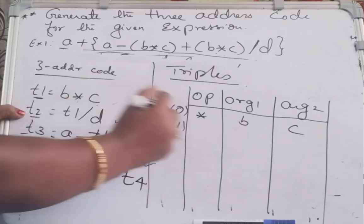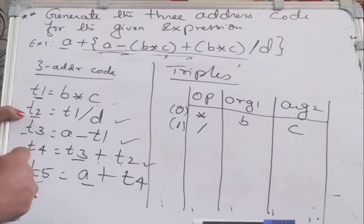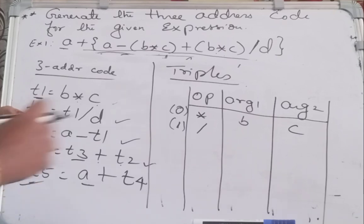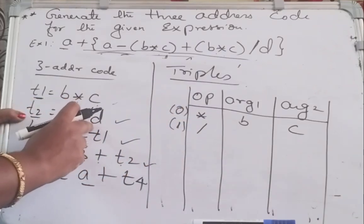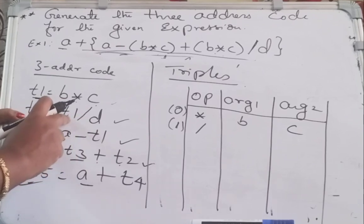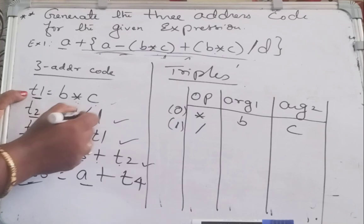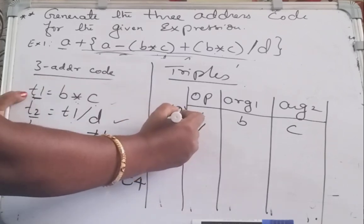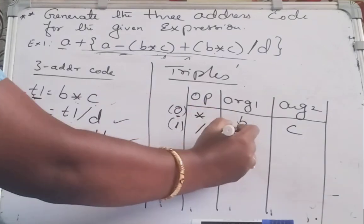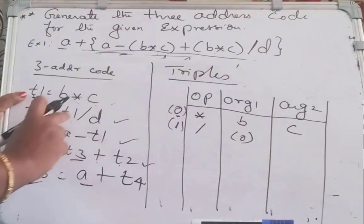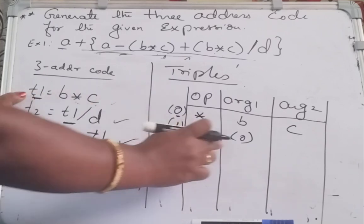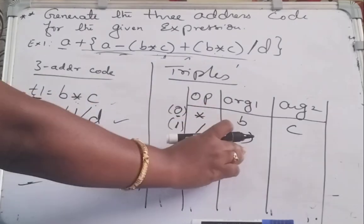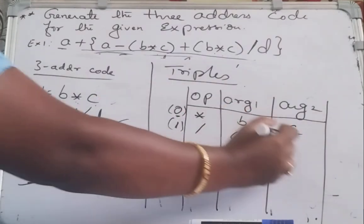The next instruction is address 1. The operator is division. T2 = T1 / D — but instead of writing T1, in triples you should write the address of that instruction. What is the address of the instruction where T1 is computed? It is 0. So write 0 for argument one. Argument two is D.